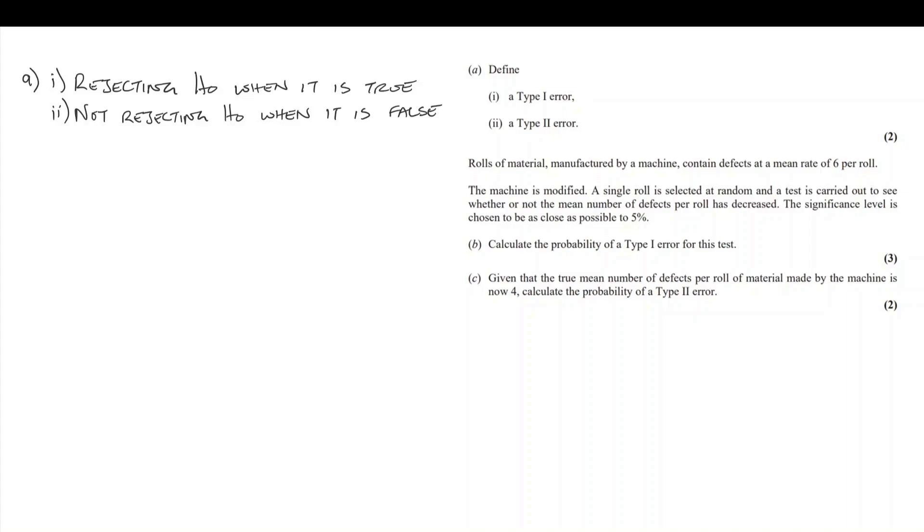The significance level is chosen to be as close as possible to 5%. There's a lot of information there. We're not actually asked to do the hypothesis test, but we are asked to calculate the probability of a type 1 error for this test.